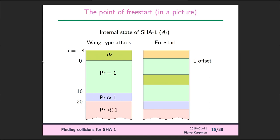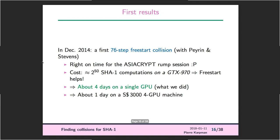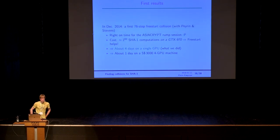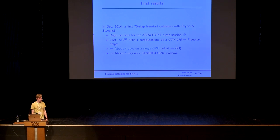In December 2014 we got what we wanted: a 76-step free-start collision with cost roughly 2 to the 50 SHA-1 computations, which was 2 to the 7.5 less than the 75-step real attack. In practical terms, 2 to the 50 is roughly four days on a high-end GPU at the time. If you had 3,000 Singaporean dollars, you could buy a 4-GPU machine and get it in one day — pretty cheap.